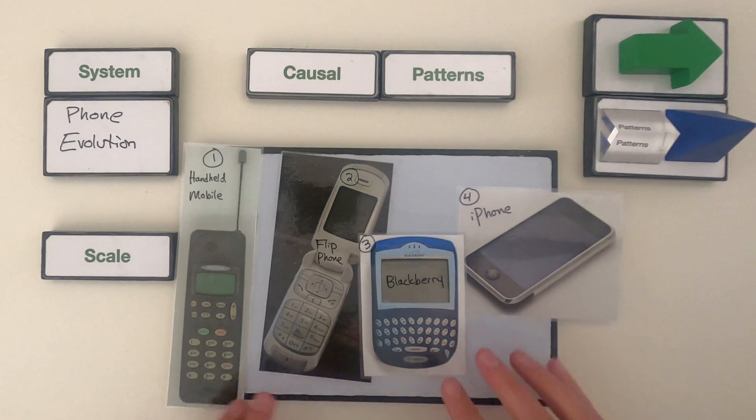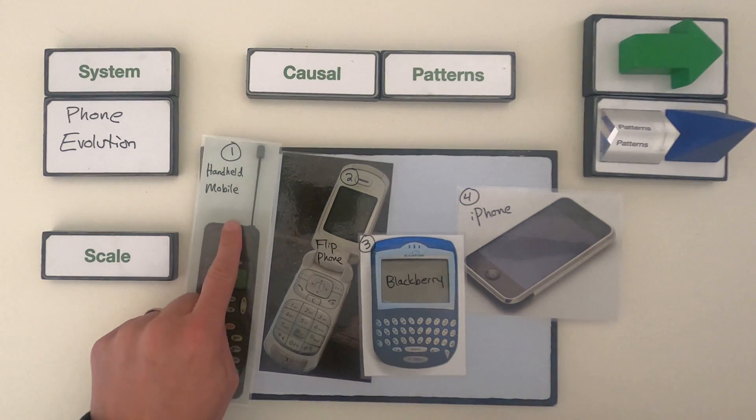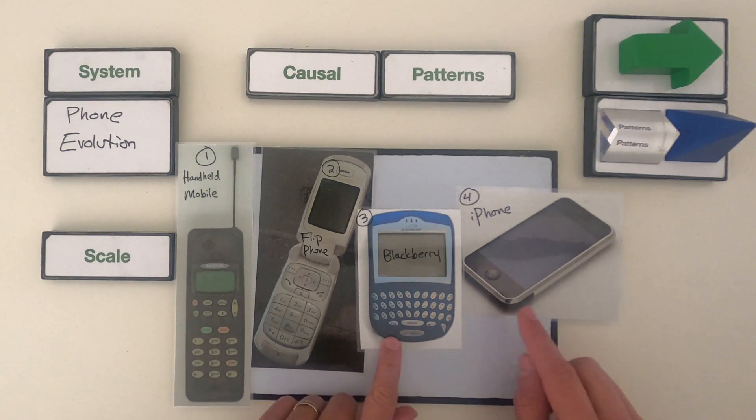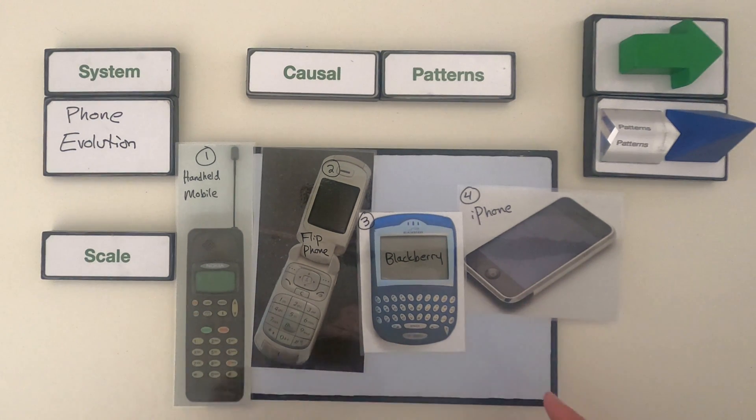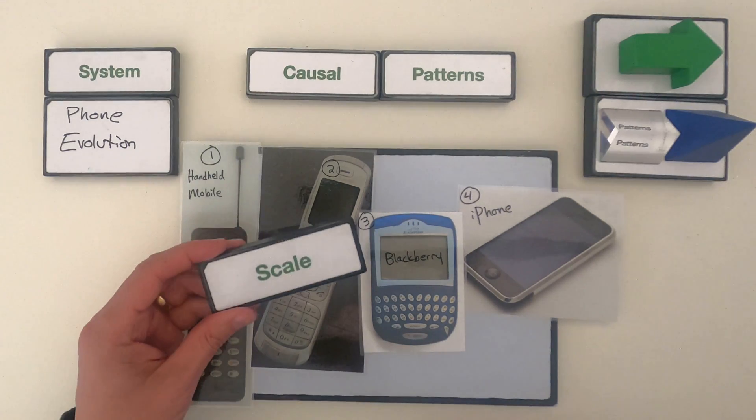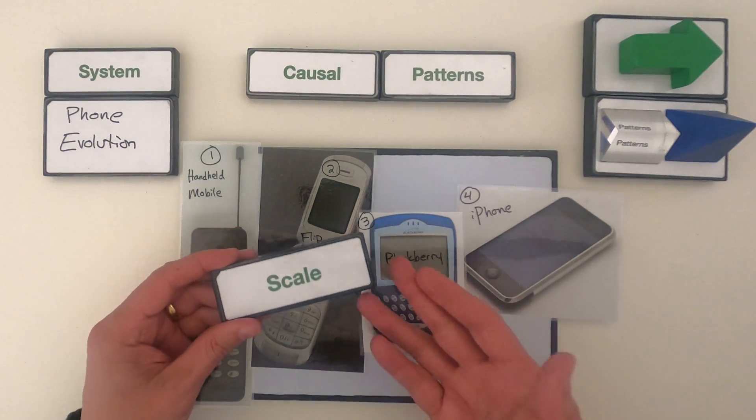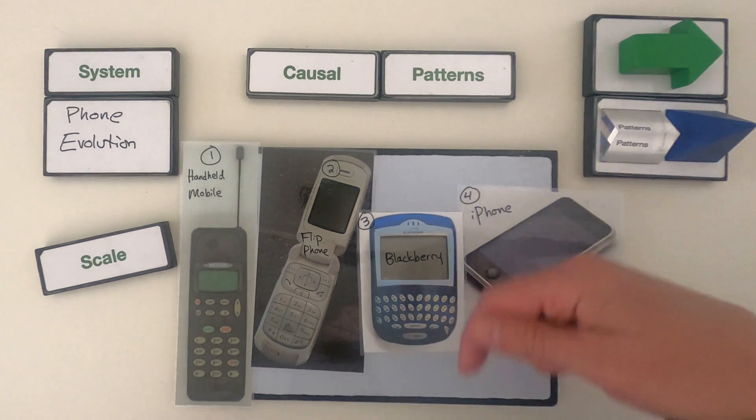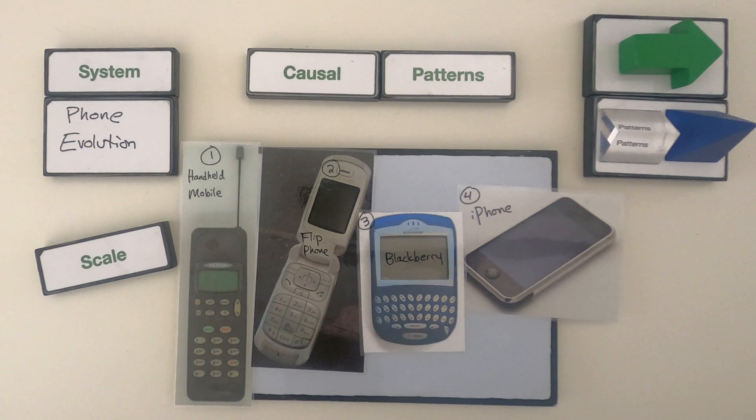Okay, so the four phones that we have, I put them in chronological order. So the first is this handheld mobile, then a flip phone, then the Blackberry, and then the iPhone. And so the scale that we're going to be looking at is not going to be size scale but it's going to be time scale. So what I'd like you to do is pause the video and then try to show me what the causal patterns would be, drifting back and forth between small time scale and long time scale.